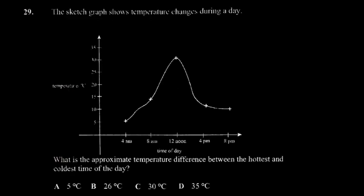The sketch graph shows temperature changes during a day. What is the approximate temperature difference between the hottest and the coldest time of the day? You have to identify where temperature increases - it's getting hotter here - and the hottest time of the day would be this one, written about 30. This one was written about five.